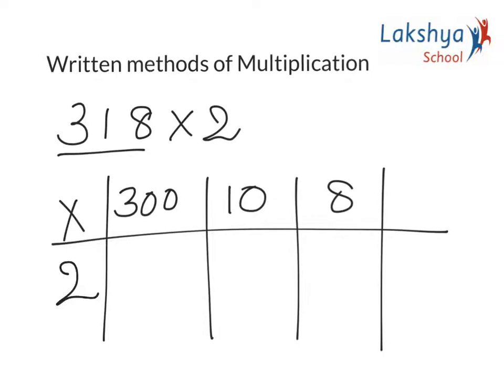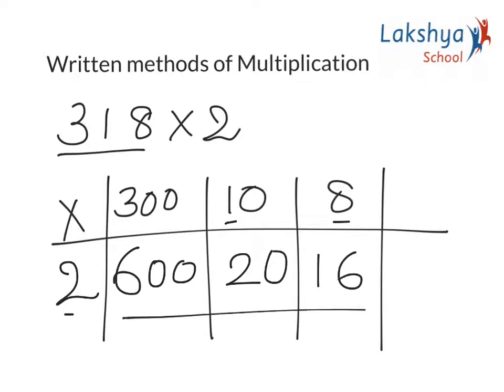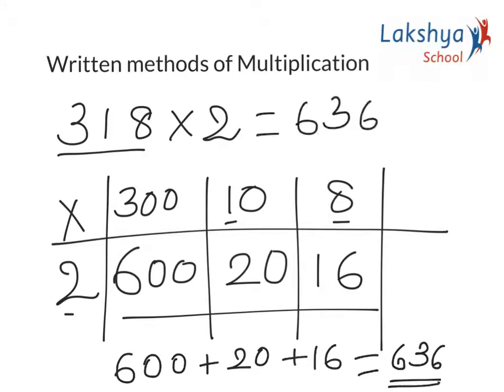Now we see 2 × 3 is 6, but it is 2 × 300 which gives me 600. Next, 2 × 10 is 20. 2 × 8 is 16. So let's add these. 600 plus 20 plus 16 gives me 636. This is the product.